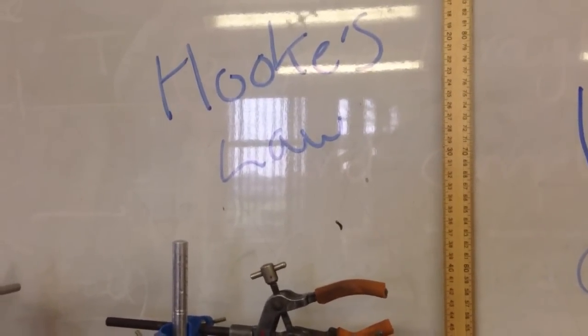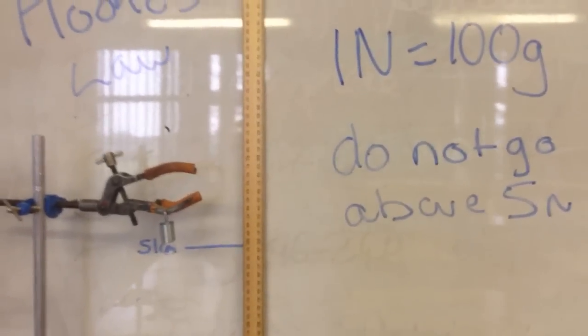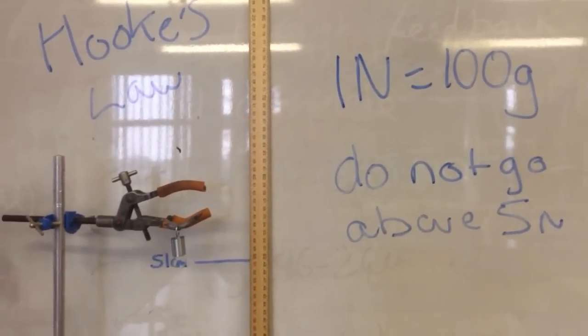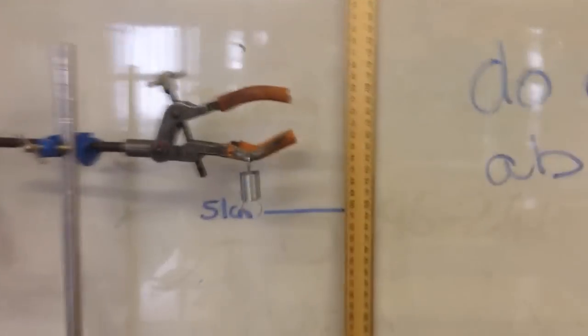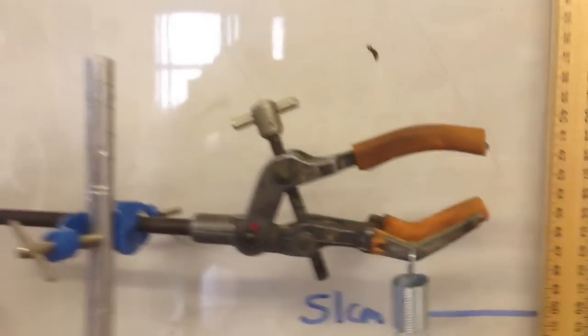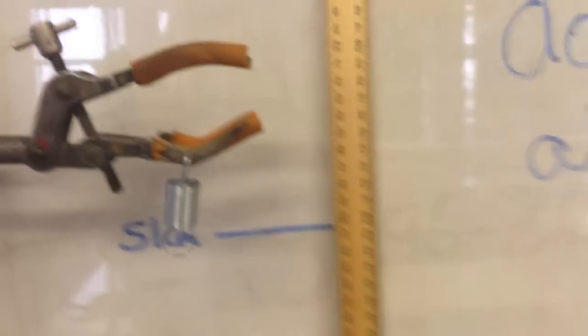So here I'm just going to show you a quick experimental setup how we can look at Hooke's law, and then I'm going to show you how to draw a perfect table, how to draw a workout of the averages and draw a graph. So what I have here is a clamp stand with a spring on the end of it.